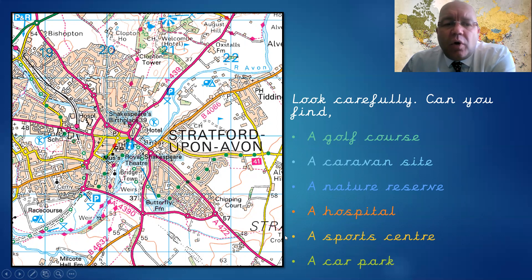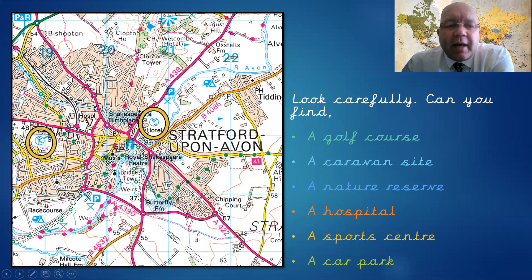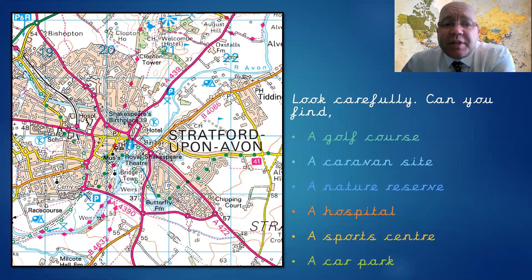Another new symbol — let's see if you can work it out. Where's the sports centre? There are actually two of them. It's this little person doing his stretching exercises — that little blue person is a sports centre, and there's one over here as well. And finally, can you find a car park? The OS symbol for a car park is the same as the sign you'd see driving around town. What sign would you see? It's the white P on a blue background. If you saw that sign around town you'd know there's a car park, and it's just the same on an Ordnance Survey map.